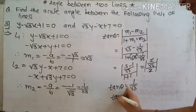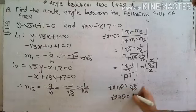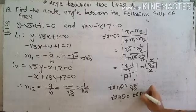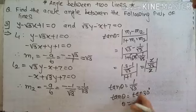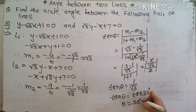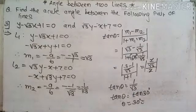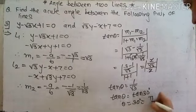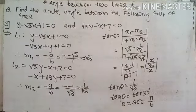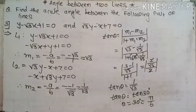Since tan 30 degrees equals 1 by root 3, we write tan theta equals tan 30, so theta equals 30 degrees. Converting to radians, the value is pi by 6. Therefore theta equals 30 degrees or pi by 6.